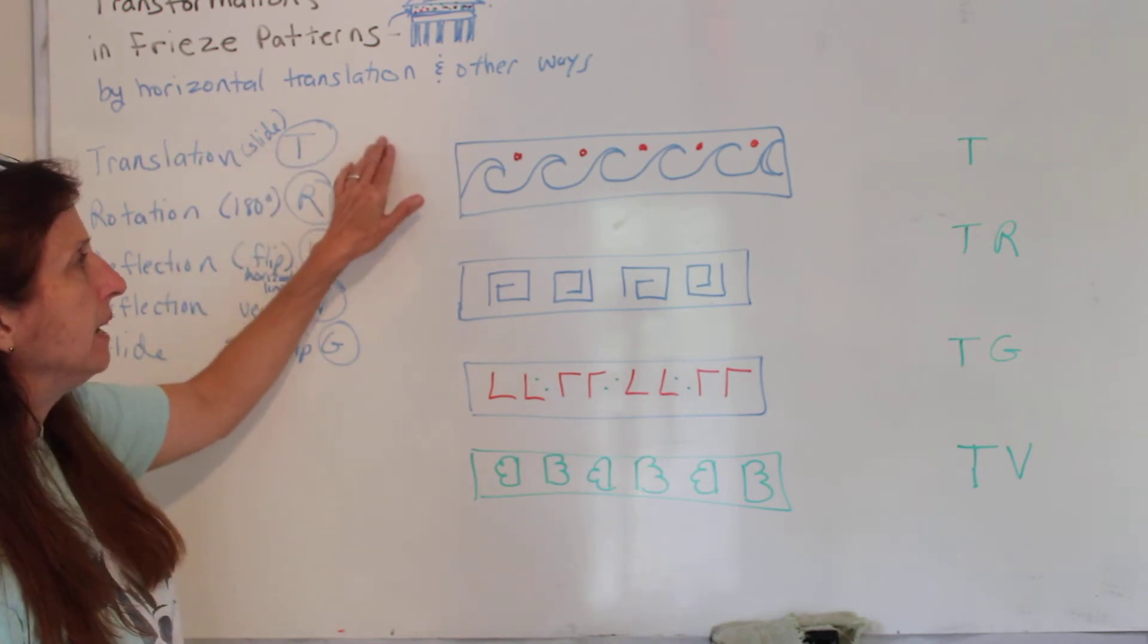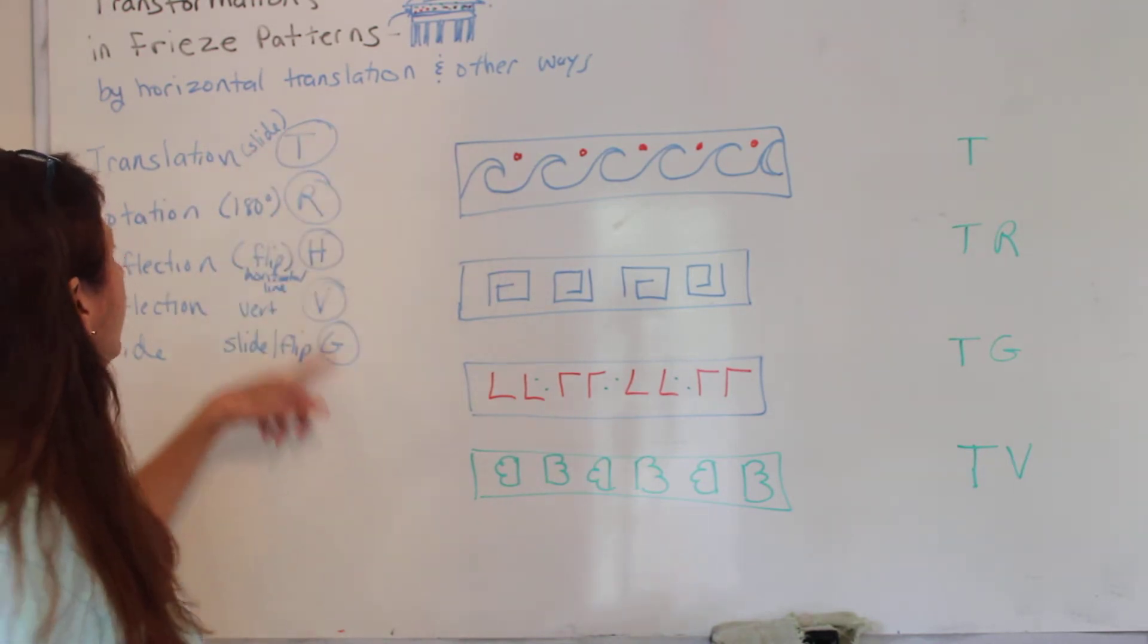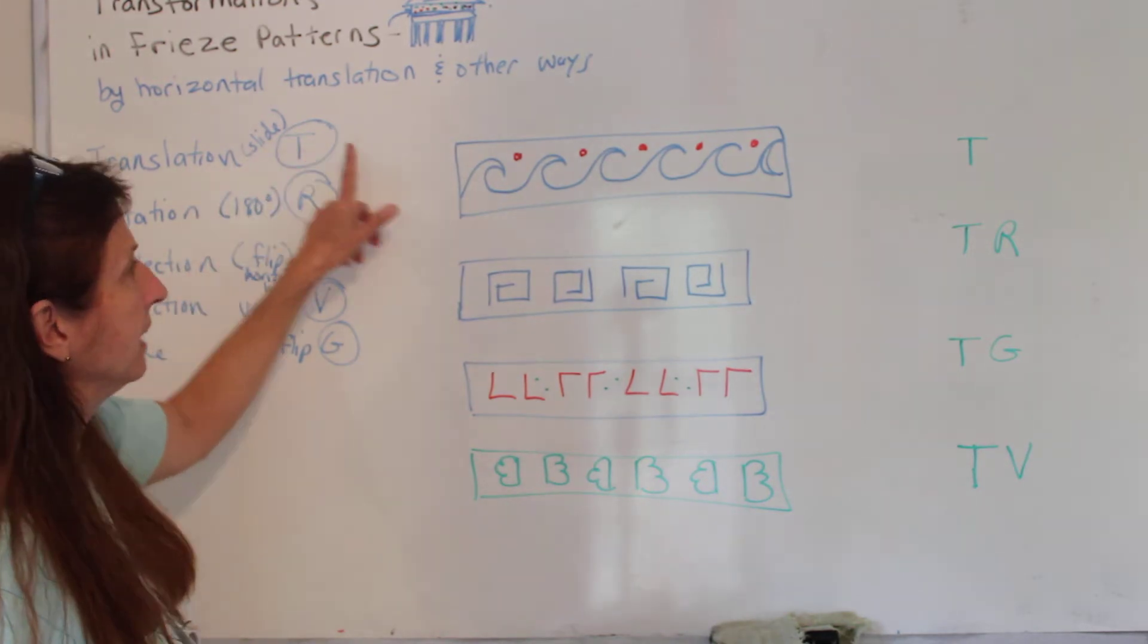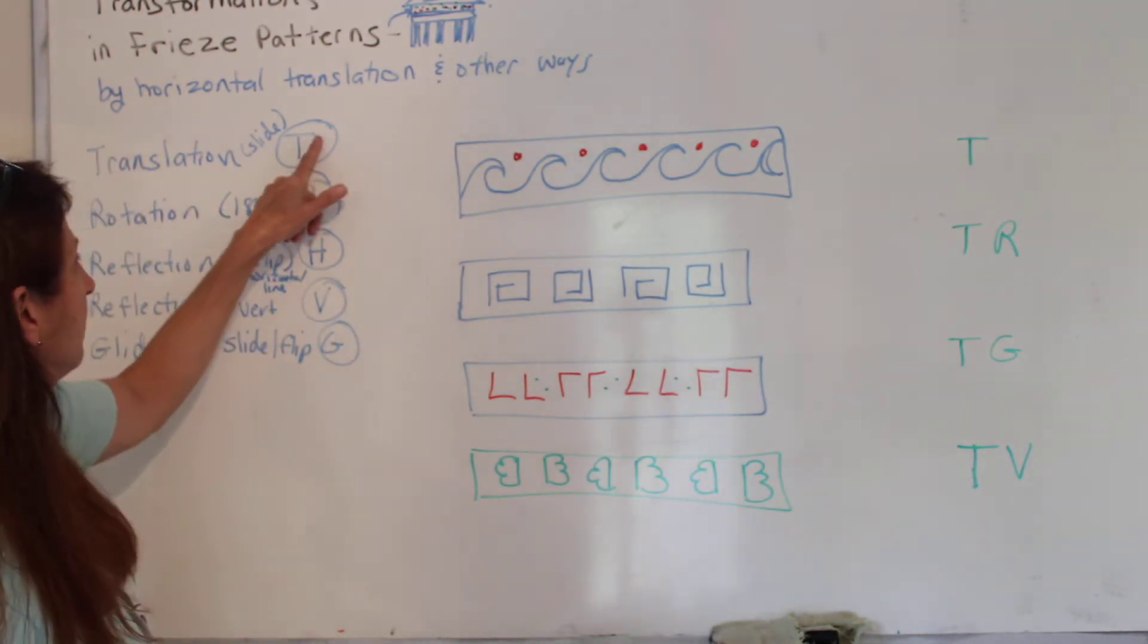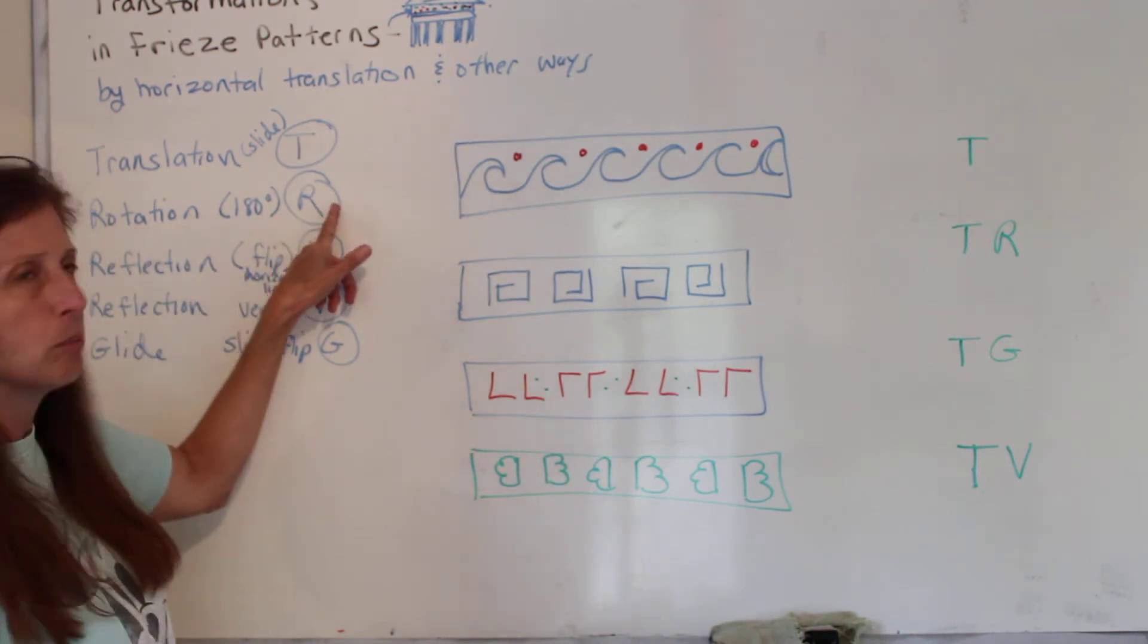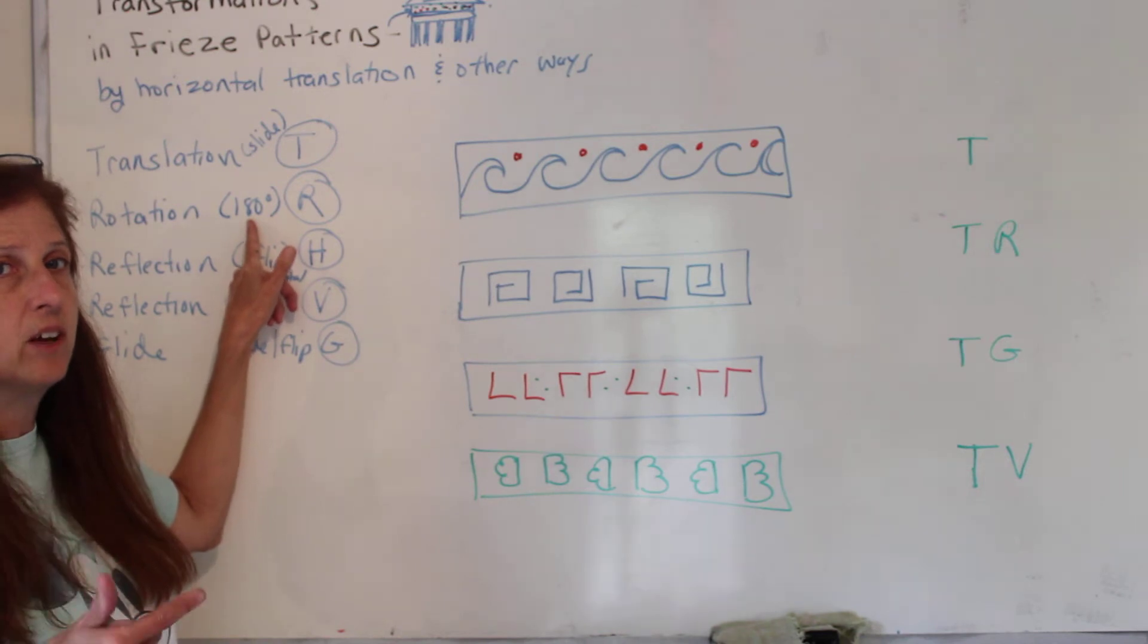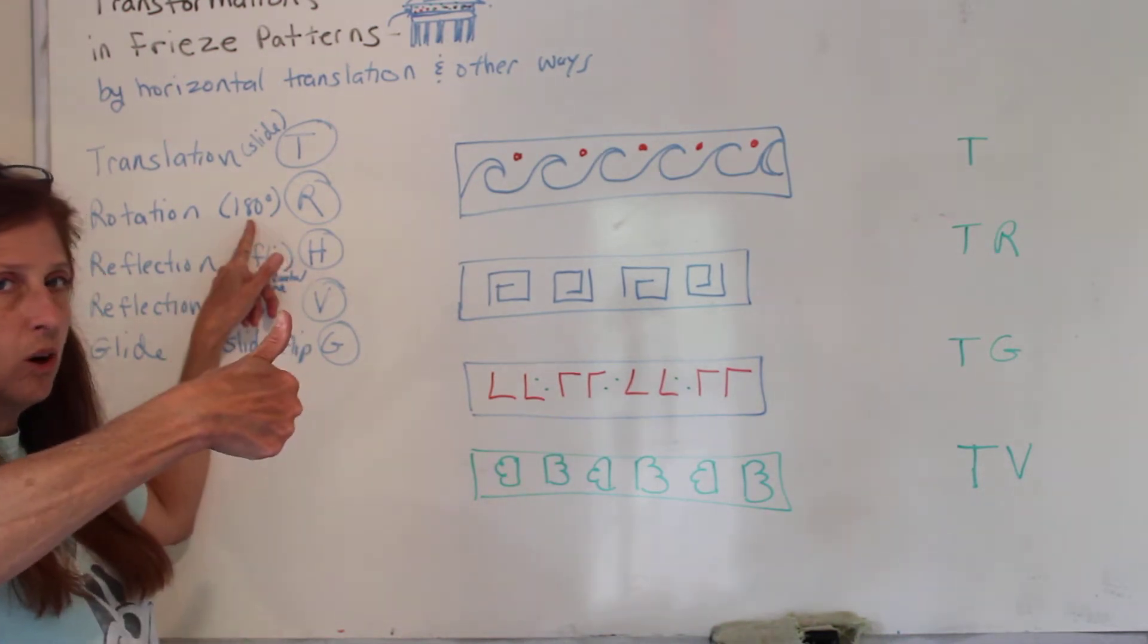Now, they can be abbreviated. The translation is the slide, and it's T. So if you just slide one down, it's T. A rotation, they abbreviate R, but that's not for any rotation. That means rotate 180 degrees all the way around.